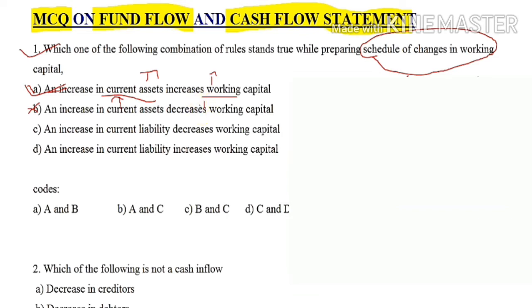The next option says: an increase in current liabilities decreases working capital. That is correct. When current liabilities increase, the working capital decreases, because liabilities represent funds owed for day-to-day operations. So this option is correct.